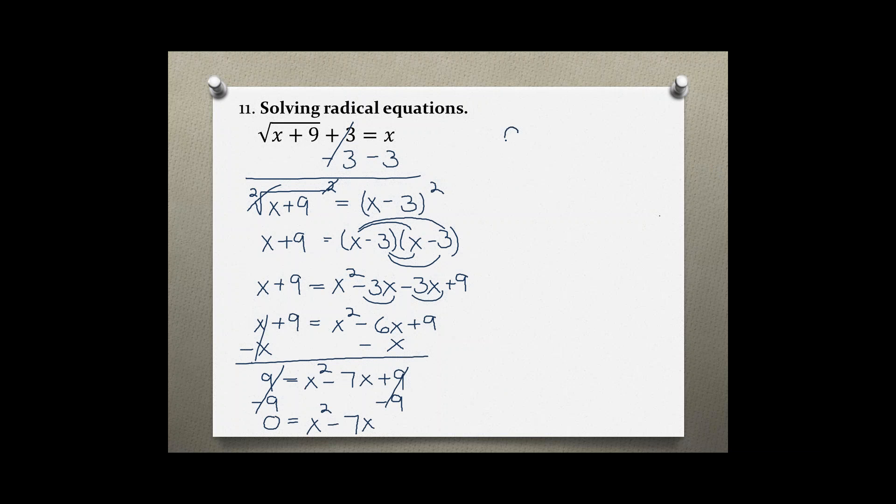Now we can use factoring to find the two solutions for this problem. I'm going to pull out the greatest common factor. So the greatest common factor of x squared and negative 7x is x.